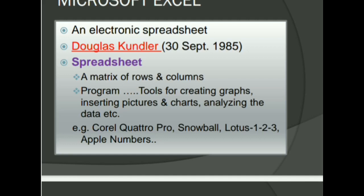What is Spreadsheet? A matrix of rows and columns is known as Spreadsheet. This is a program which you can use to create graphs, pictures, charts, and analyze data. For example, Corel Quattro Pro, Snowball, Lotus 1-2-3, Apple Numbers. These all are different kinds of spreadsheets.